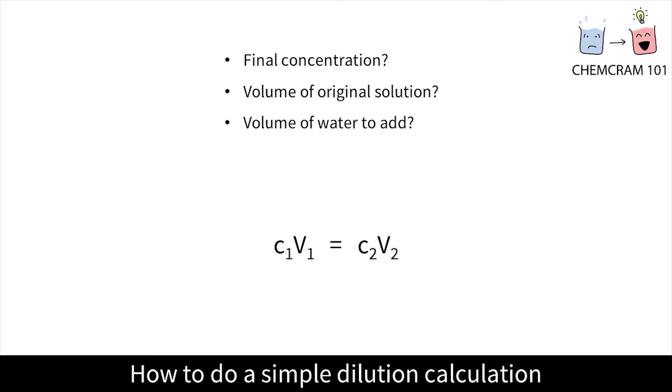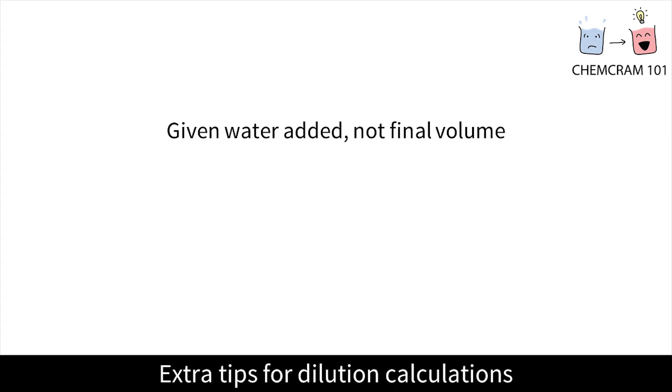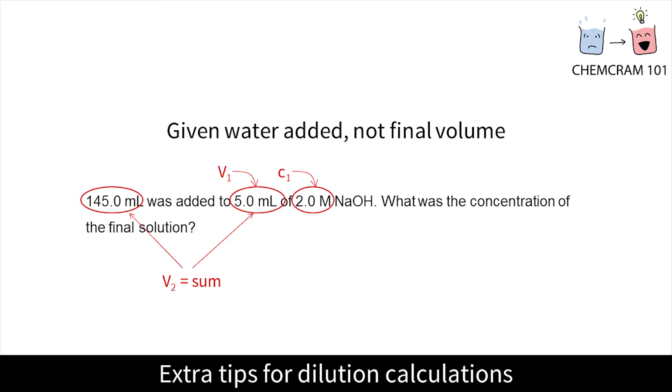You'll have one unknown that you'll need to find. The main trick that will come up in dilution calculations is that sometimes they'll tell you how much water was added instead of the final volume. If there isn't any extra info, the final volume is the volume of the water plus the volume of the original solution. So for this question, the final volume V2 is going to be 5 mL plus 145 mL, which is 150 mL or 0.15 liters.